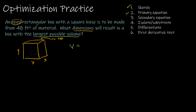The primary equation is whatever I'm trying to maximize — here that's volume. Volume equals the area of the base multiplied by the height. If you're rusty on volume formulas, there's a table in the back of your textbook or you can search YouTube. The area of the base is x times x, and the height is y, so volume equals x²y.